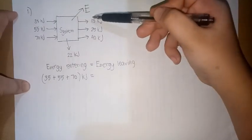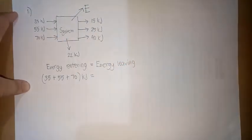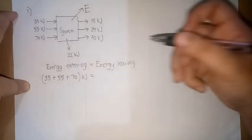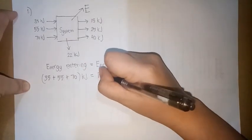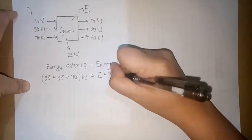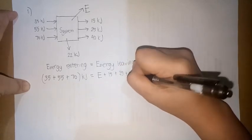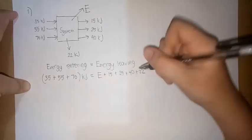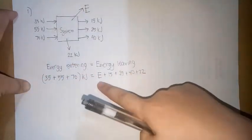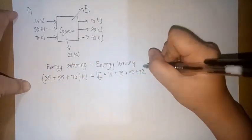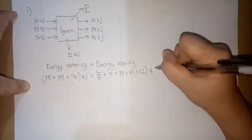So meron tayong 1, 2, 3, 4, 5 energies leaving the system. First, we have E, then plus 15 kilojoules plus 25 plus 40 plus 22. So ito yung pumasok na energy, ito yung lumabas na energy.